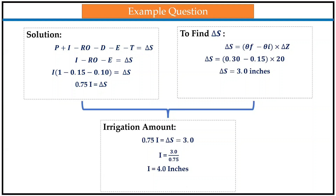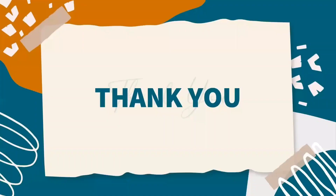Taking both solutions from step one and step two and comparing the left-hand side with the right-hand side, we are able to get the irrigation value — that is 4 inches of irrigation, which the farmer has to apply to his fields. And that's it, thank you so much.